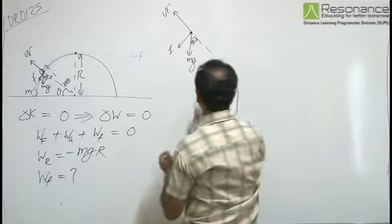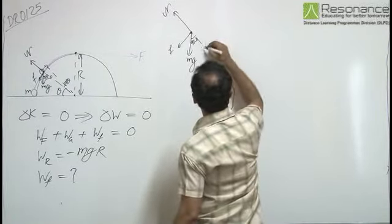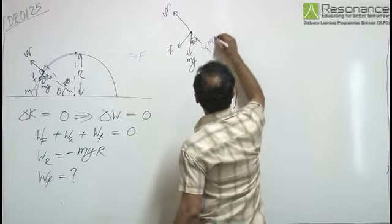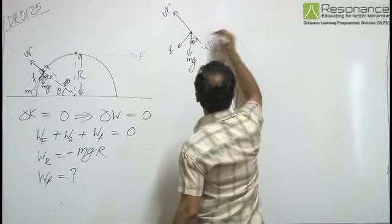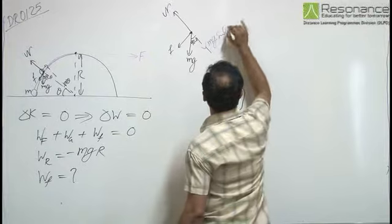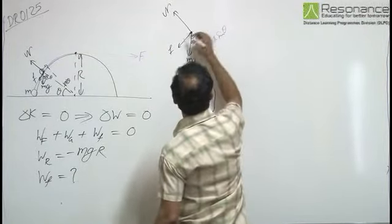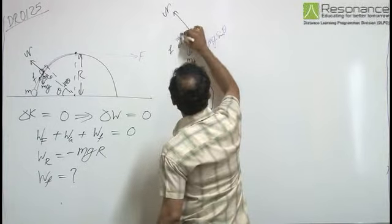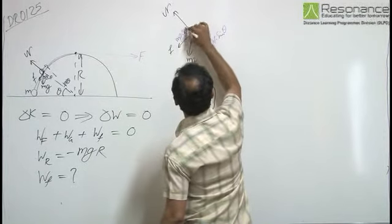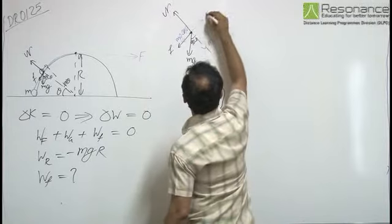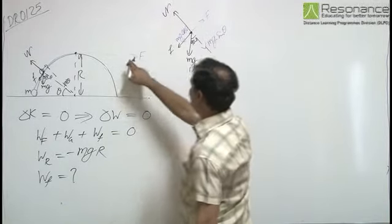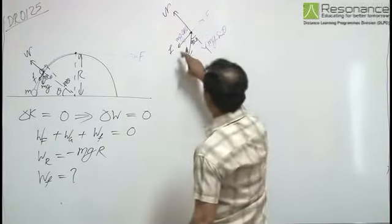So we have forces: here we have Mg cos(90 minus theta), that is Mg sin theta. In this particular direction we have force Mg cos theta. In upward direction we have force due to this particular tension.